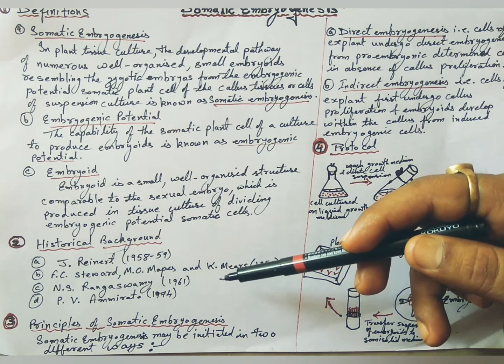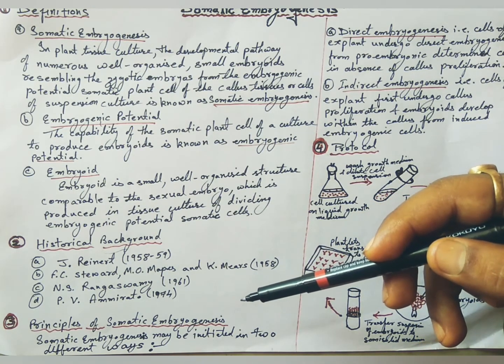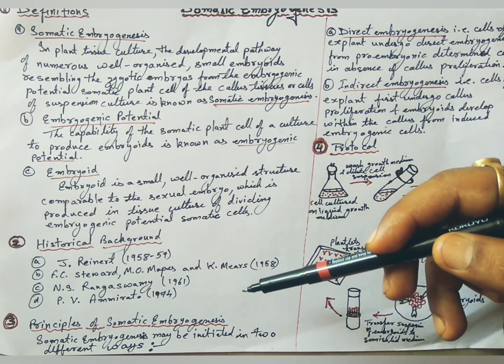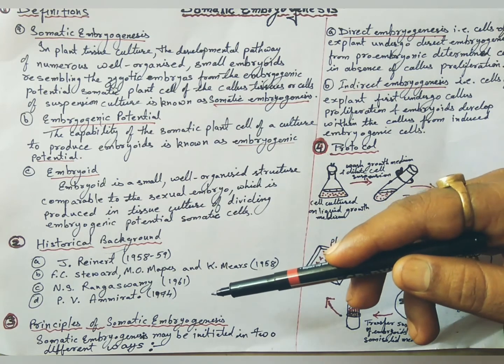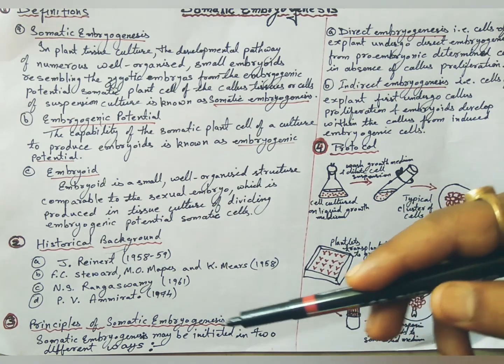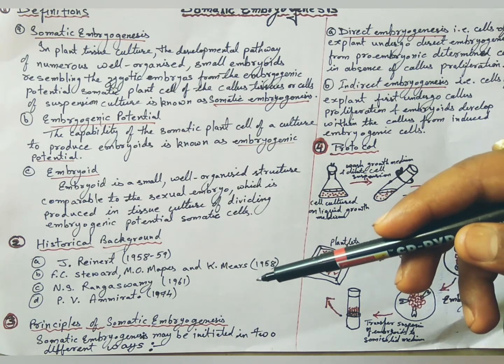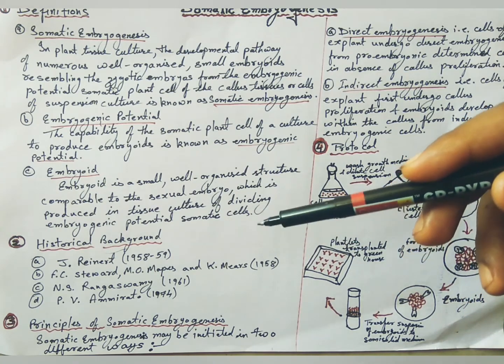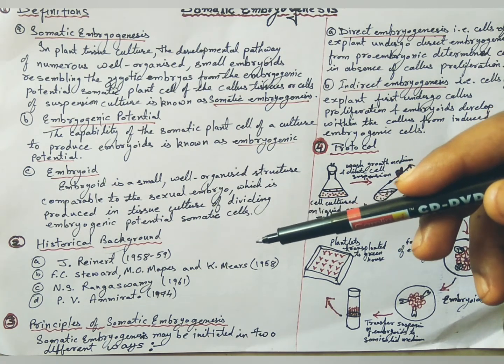N.S. Rangaswamy, 1961, studied in detail the somatic embryogenesis in citrus species. P.B. Ammirato, 1974, reported the effect of abscisic acid on the development of somatic embryos from cells of Carum carvi.